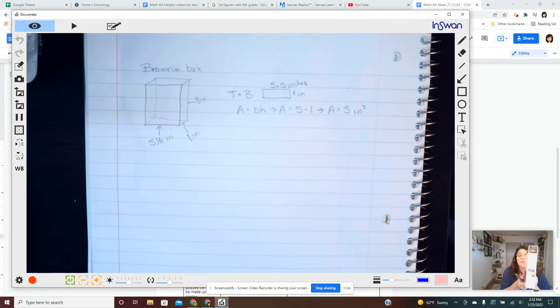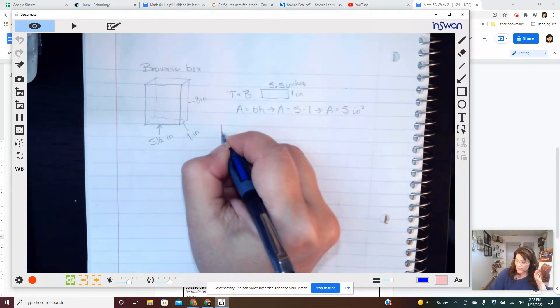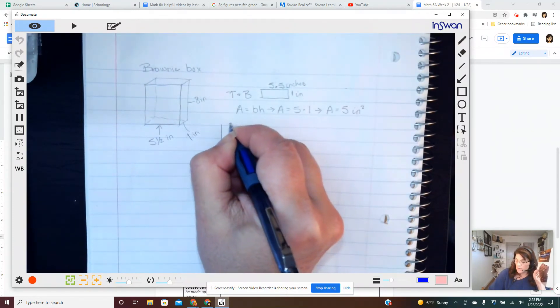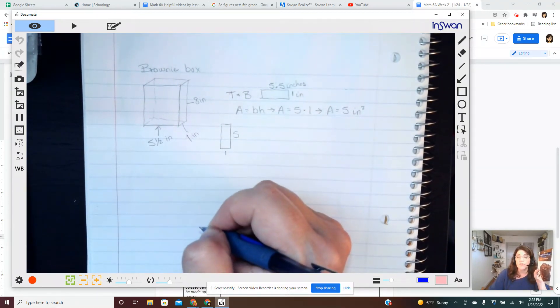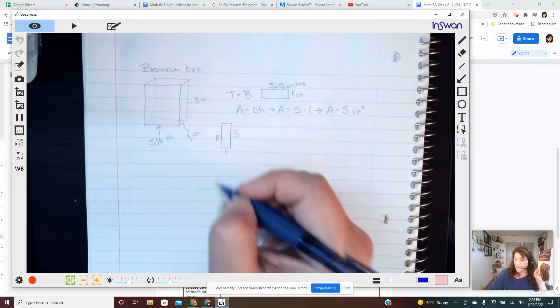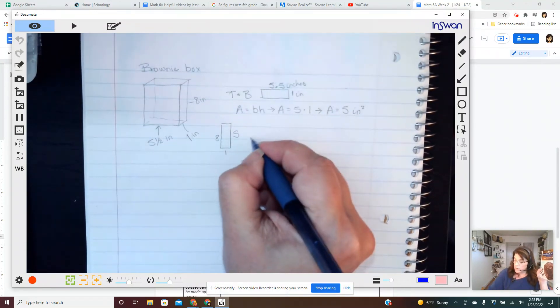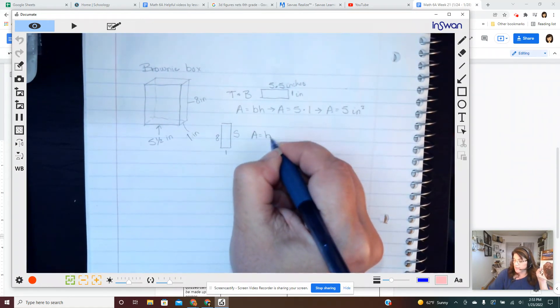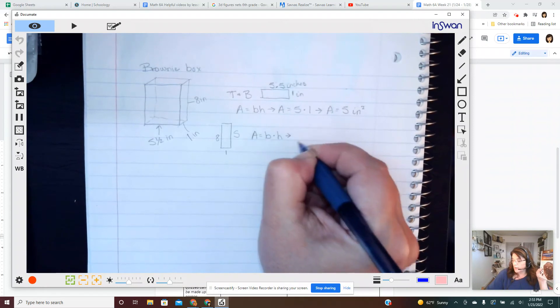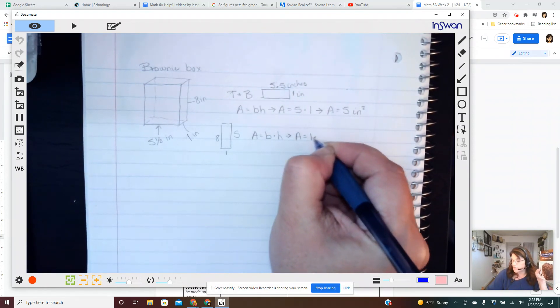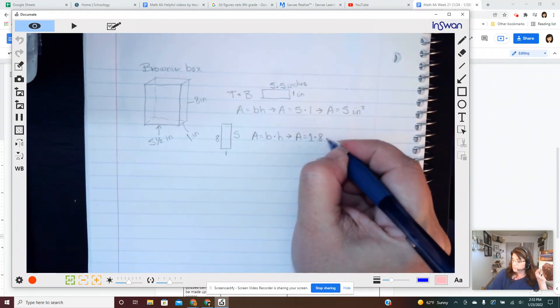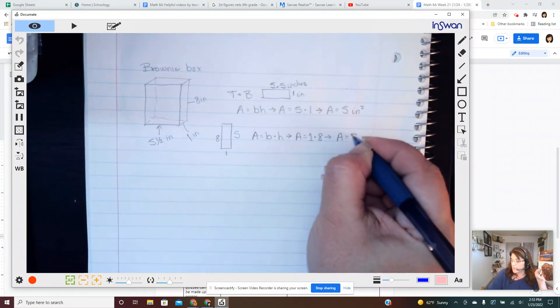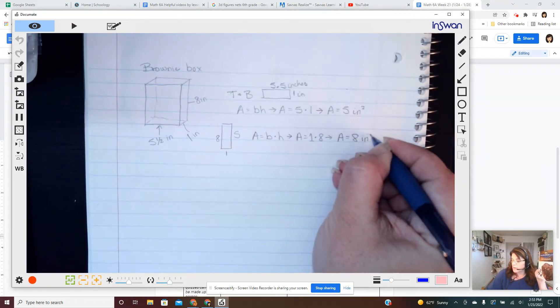That's literally just the top and the bottom of the box where they're glued together. Well now let's look at the sides where they put the nutritional information. We know that the side looks like this. It's one inch we determined, but we determined it was about eight inches tall. So area equals base times height. Area equals one times eight. Area equals eight square inches.